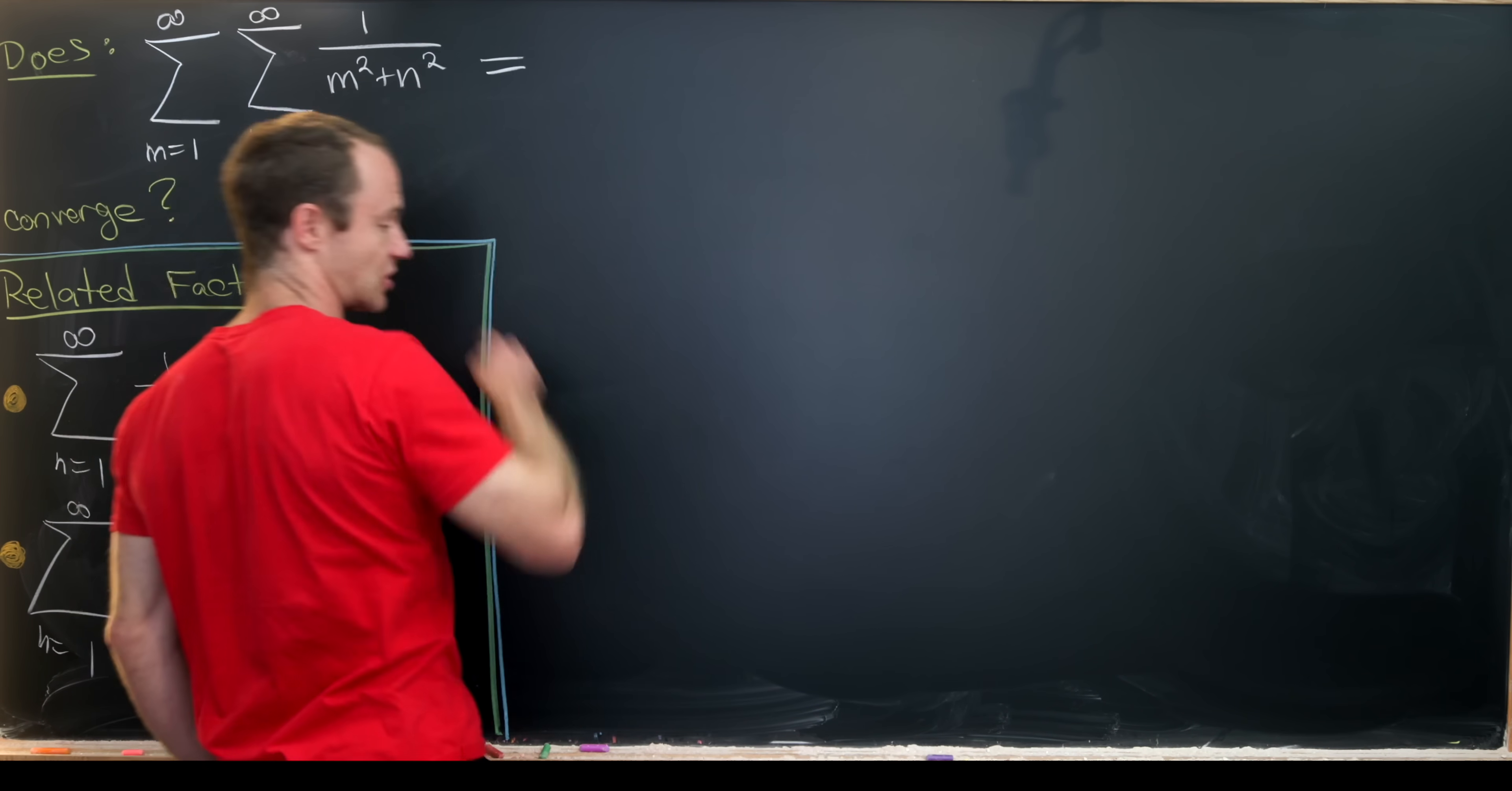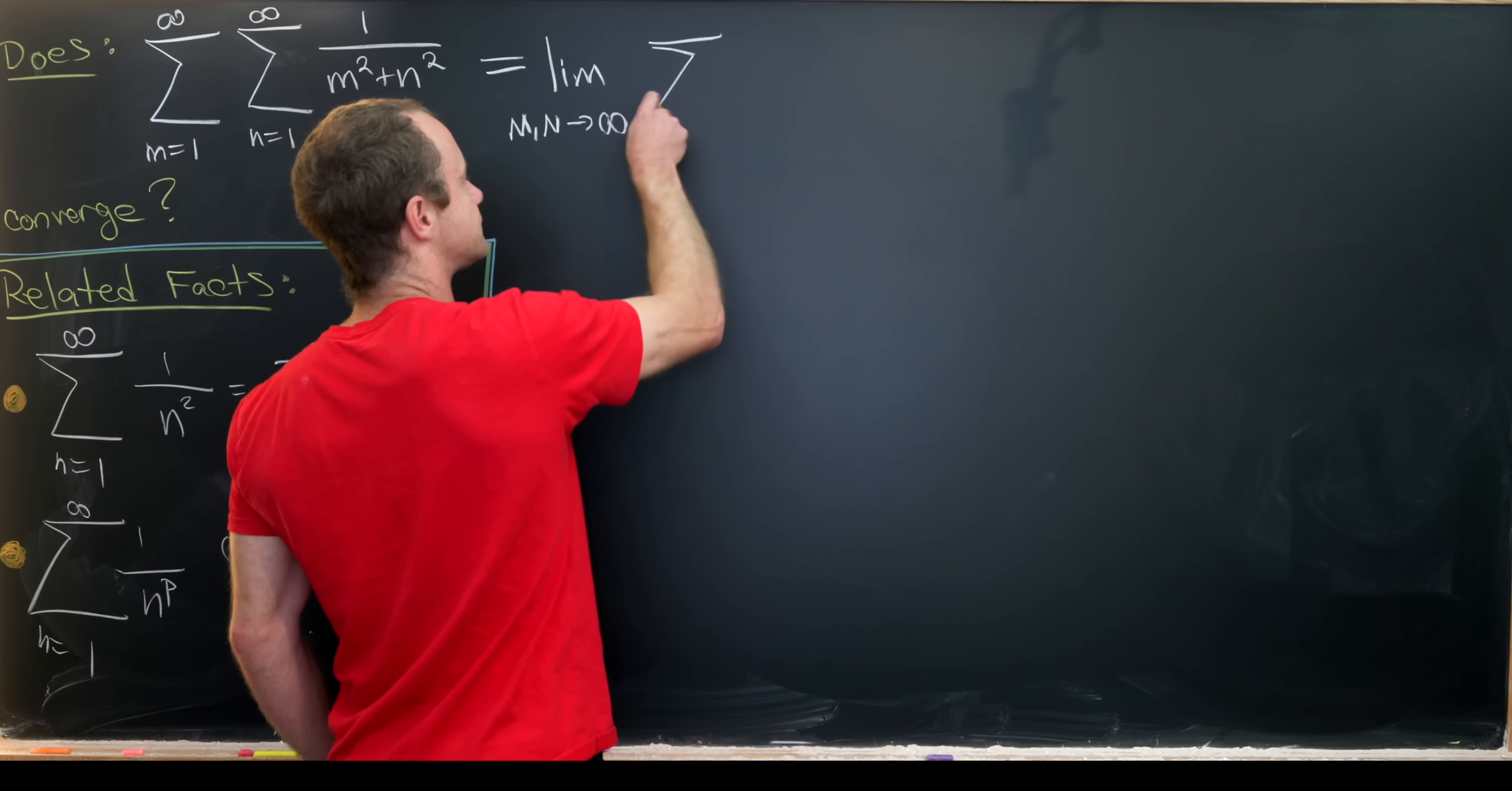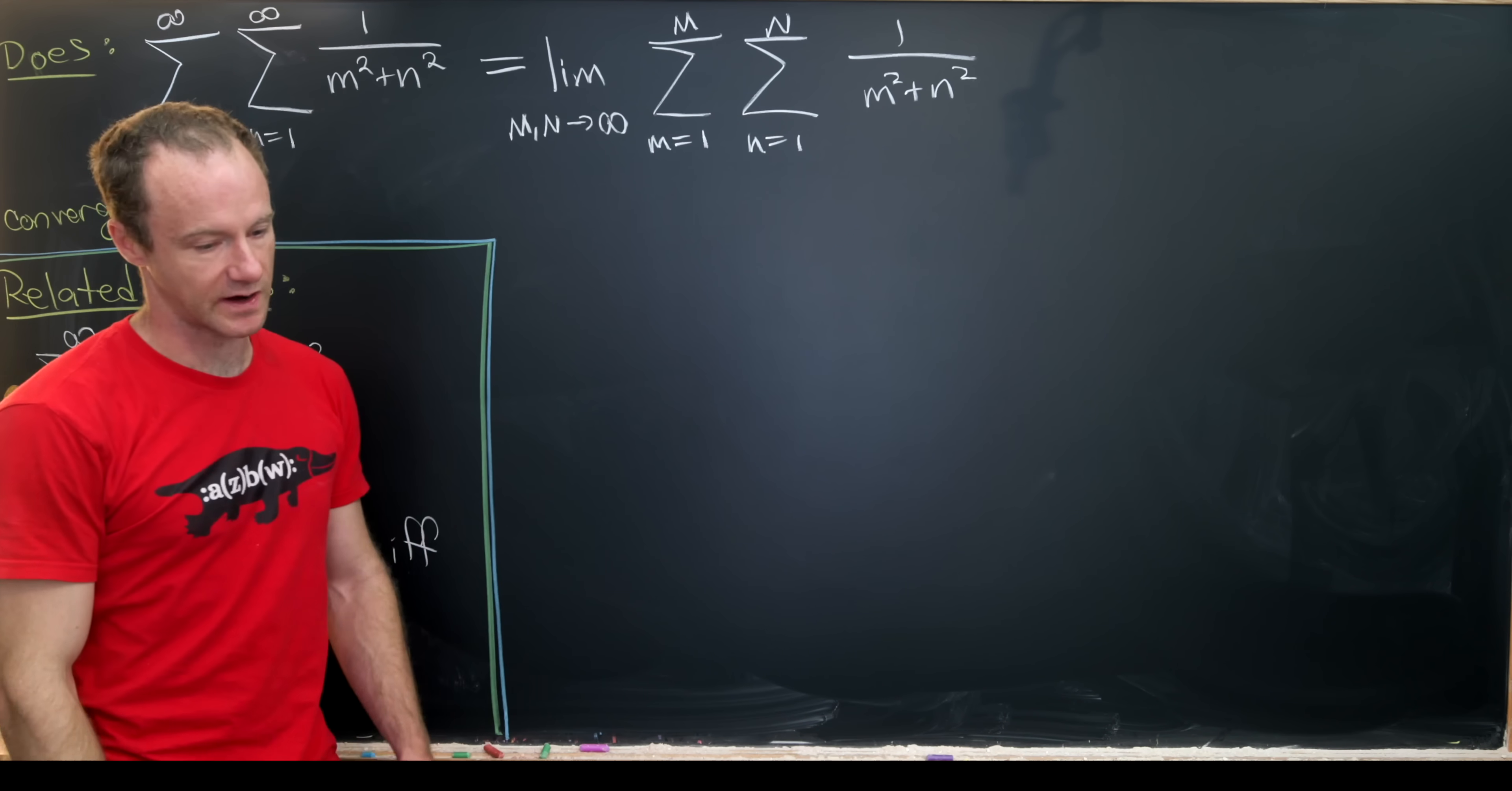We're going to first start by writing this double sum as the limit of partial sums. So we'll take the limit as capital M and capital N go to infinity of the sum as m goes from 1 to capital M, and then the sum as n goes from 1 to capital N of 1 over m squared plus n squared.